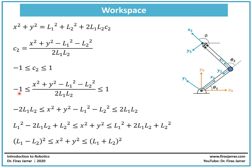We must apply both sides of the inequality by 2 L1 L2, then add L1 squared and L2 squared to both sides to obtain the inequality in terms of x squared plus y squared.